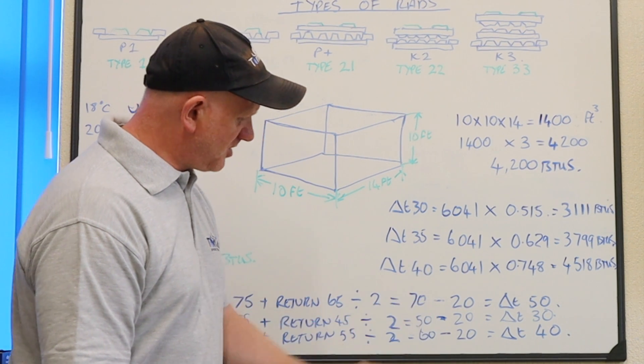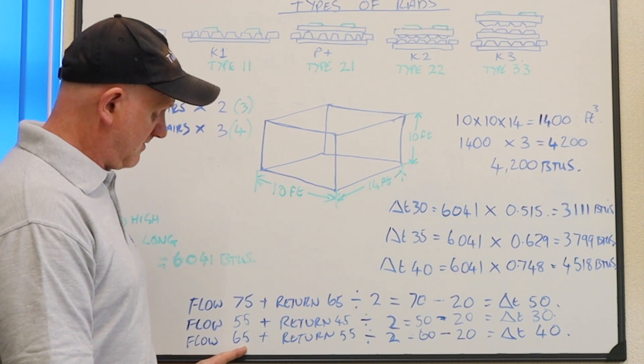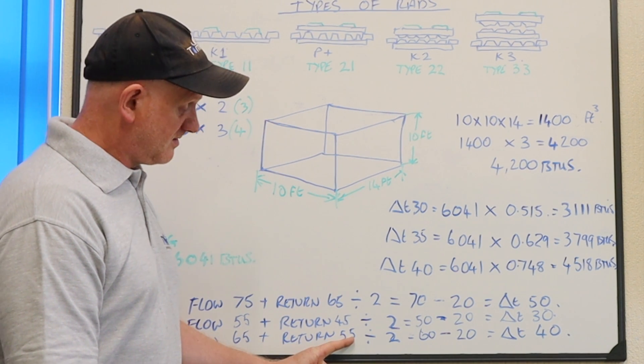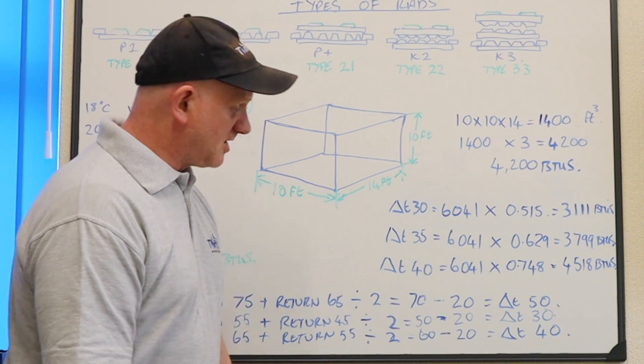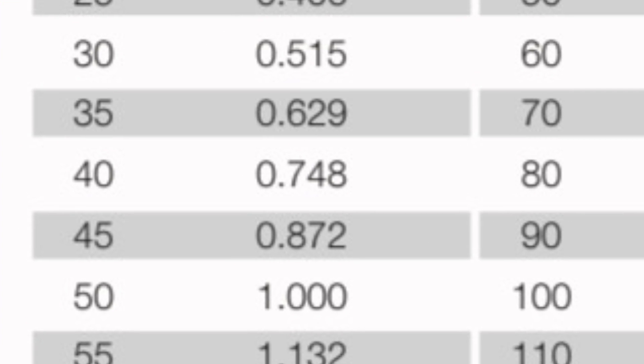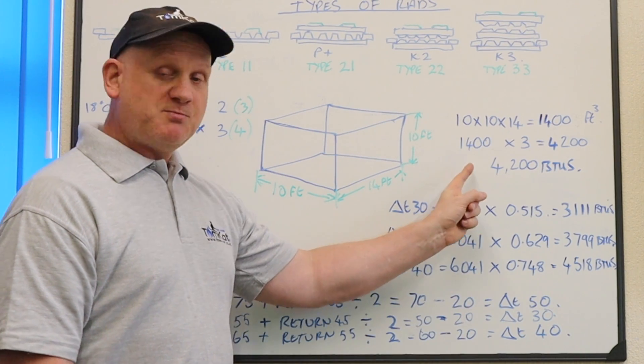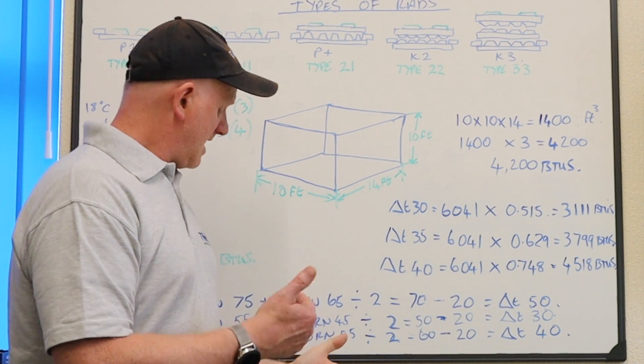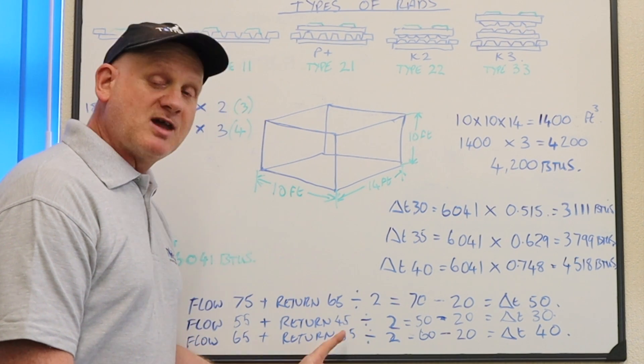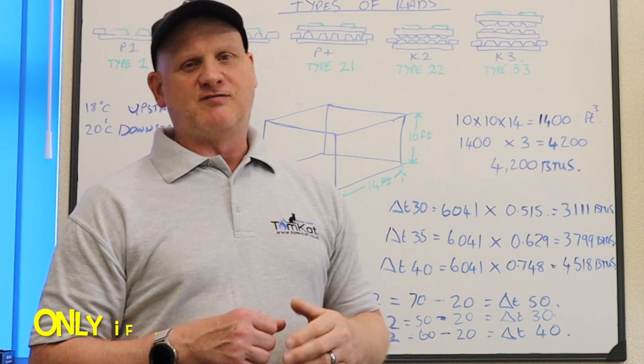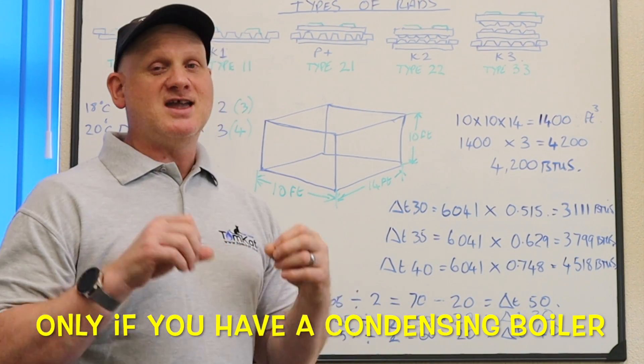So if I go for a delta T of 40, remember delta T of 40 is a flow temperature of 65, a return temperature of 55, which gives me a delta T of 40. I've got my 6041 times from that chart 0.748 gives me 4518, which is big enough now for this room to heat it at a flow temperature of 65 and a return temperature of 55. Now this return temperature is important because if we keep it lower than 55, it will be in condensing mode.